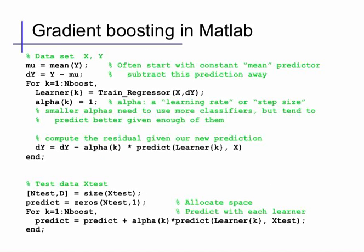So here's pseudocode for the procedure. Again, specialized to mean squared error. Usually we start off with the extremely simple predictor of a constant value. So the best mean squared error predictor of y with a constant value is simply its mean.